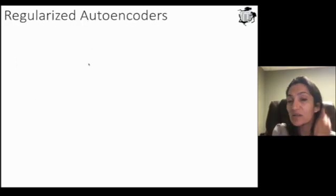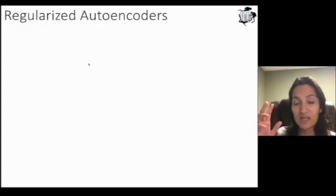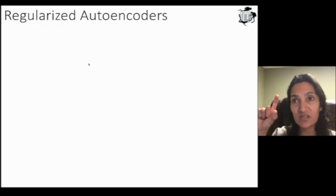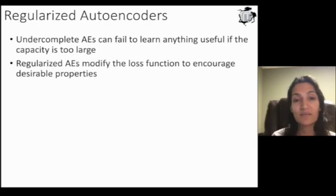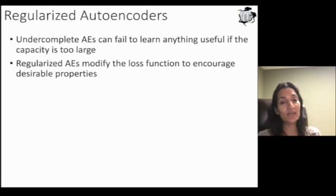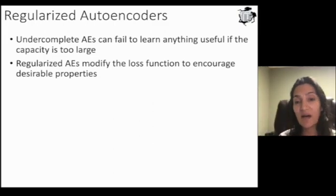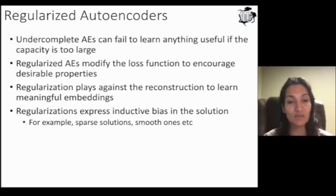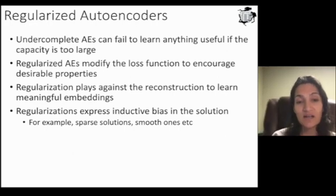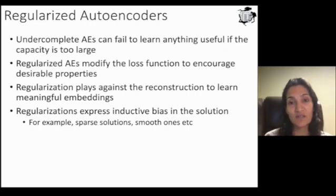So let's get back to this idea that you need to regularize an autoencoder. Of course, one of the inherent regularizations is the reduction in dimensionality in the code layer. You can have other ways of reducing the capacity of an autoencoder. You can use regularizations to modify the loss function to encourage other desirable properties. And so this regularization would play against the reconstruction to learn meaningful embeddings. So regularizations are a way in the neural network world to express inductive bias in the solution, to veer the solution in a certain direction.